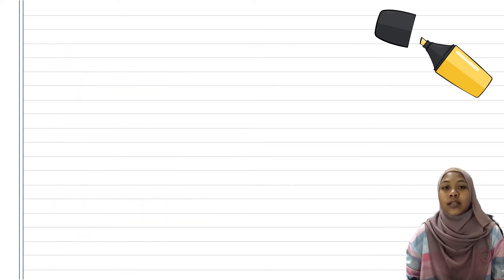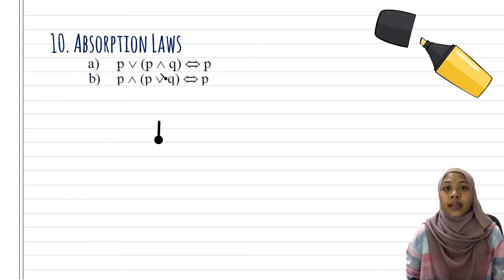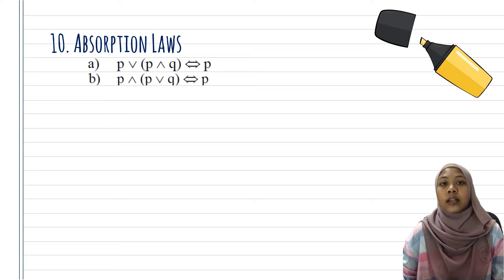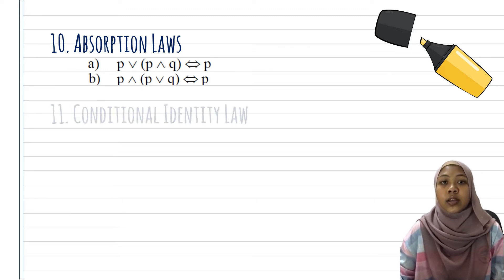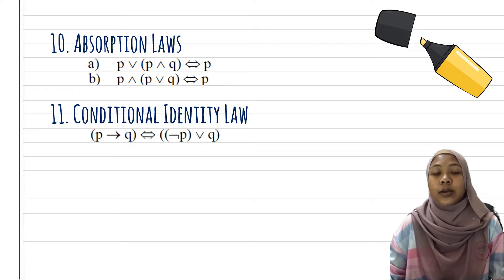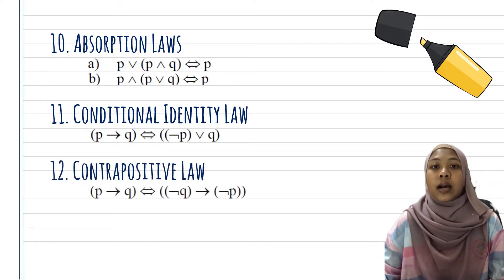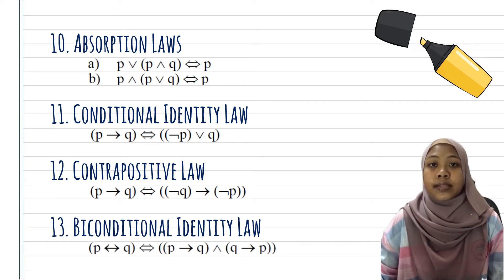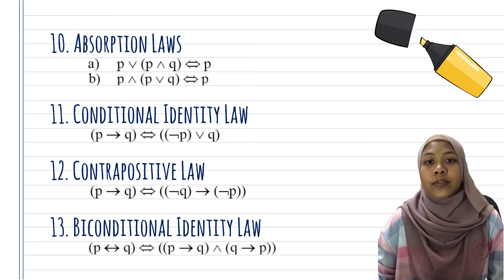Next, Absorption Laws. We use this law when P and P are in the same set but the symbol must be different, which is OR and AND, and we will get the same set as before. Conditional Identity Law is when we want to change from conditional statement to this statement, which is NOT P OR Q. Contrapositive and Biconditional Identity Law are additional laws. Sometimes they help us to solve the question.